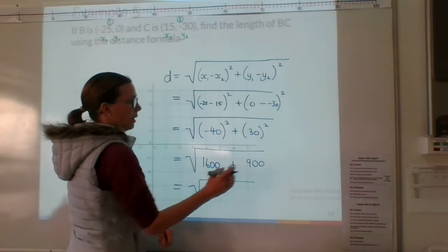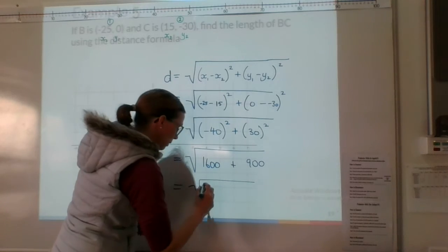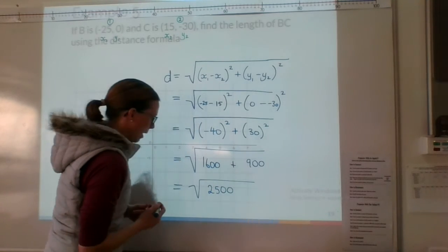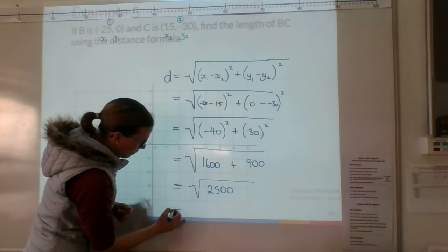Okay. 1600 plus 900 is going to be 2500. Alright, so let's find the square root of that.